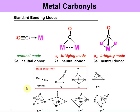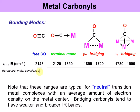Looking at some IR data for neutral metal complexes: free CO comes in at 2143. Terminal modes generally occur in the range of 2120 to 1850 wave numbers. If the CO is bridging two metal centers, these are typically lower in energy — around 1850 to 1720 — because two metal centers can back-donate, adding more electron density into the carbonyl. If the carbonyl bridges three metal centers, the shift is even further down, to 1730–1500. Note that bridging carbonyls tend to have weaker and broader IR bands.